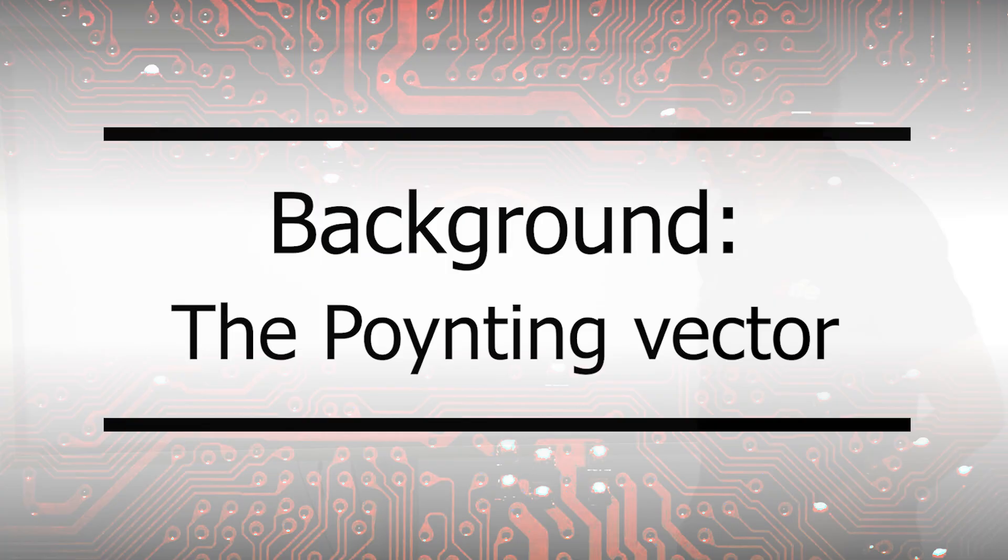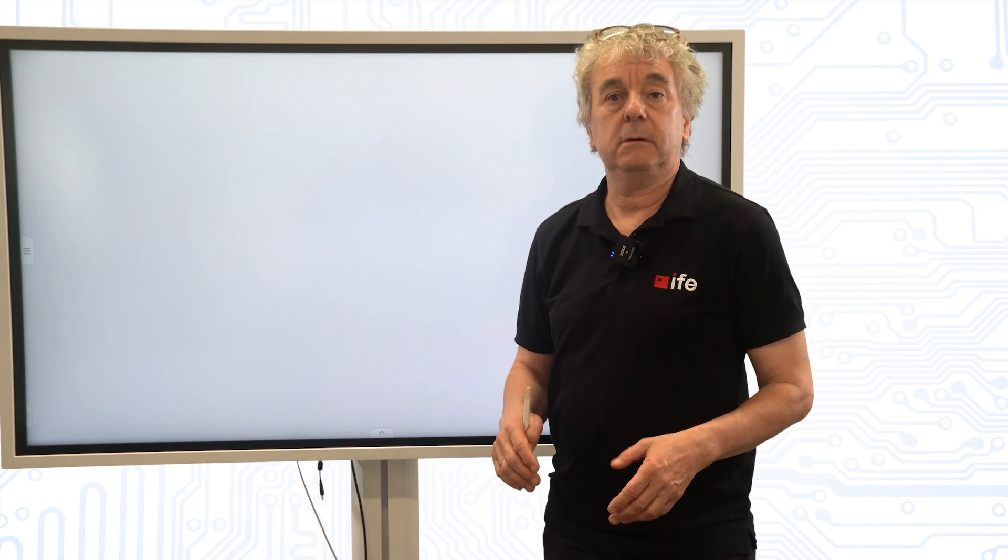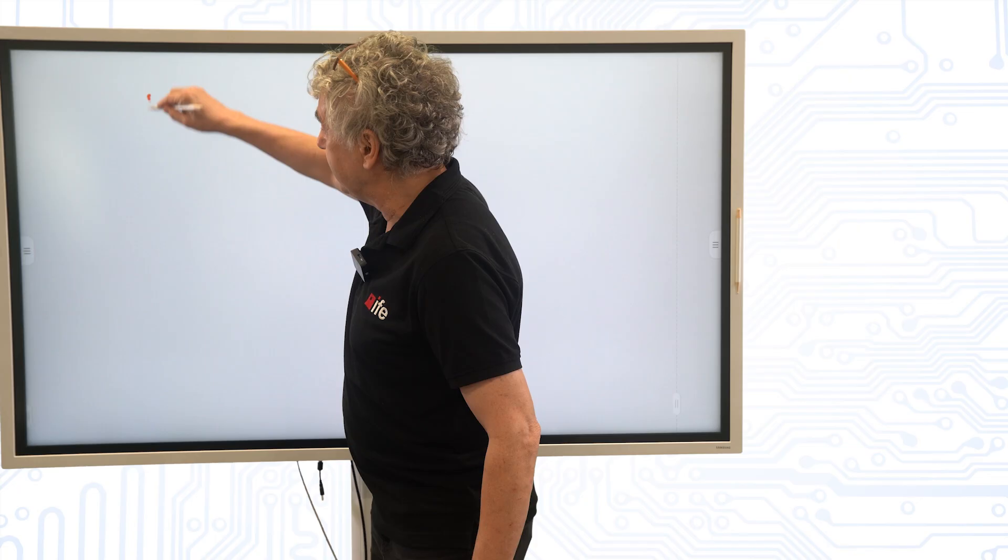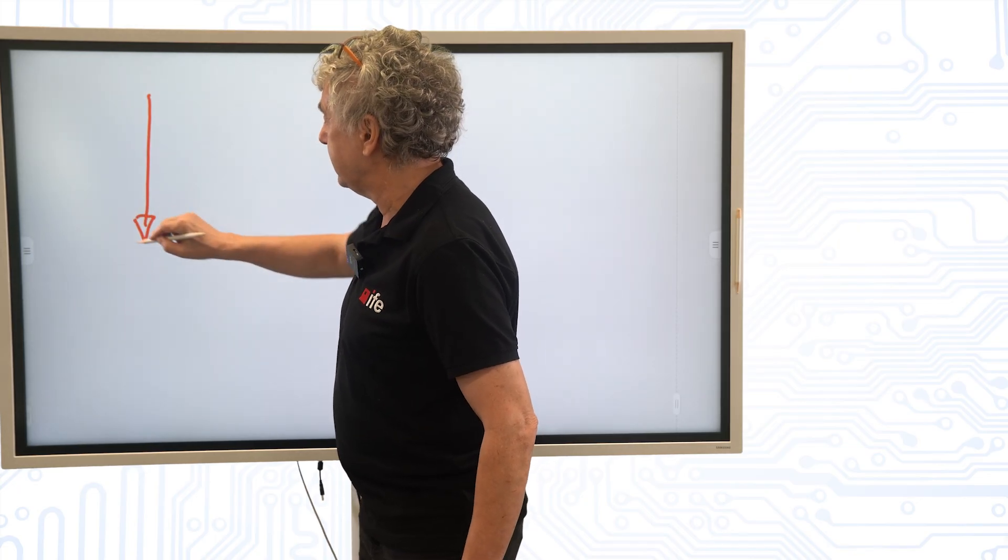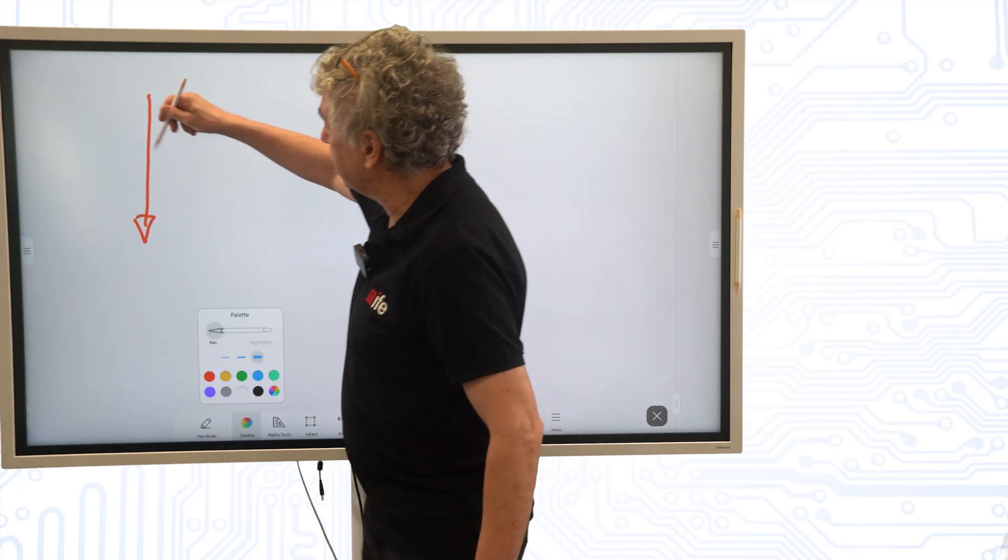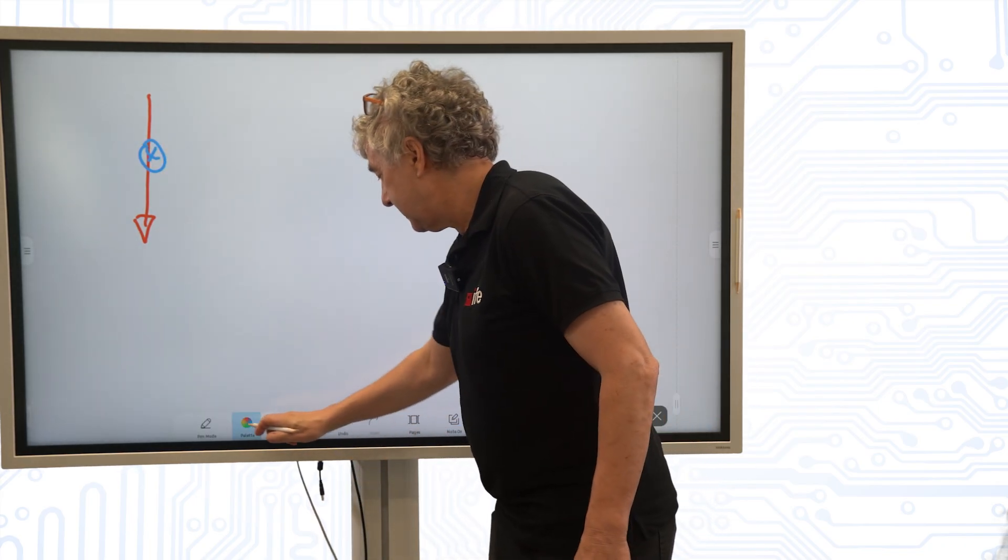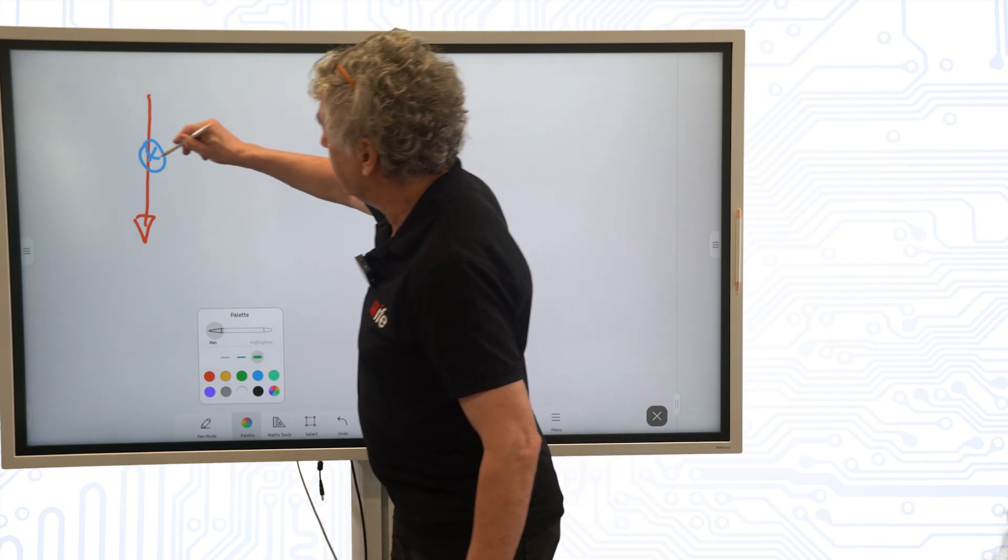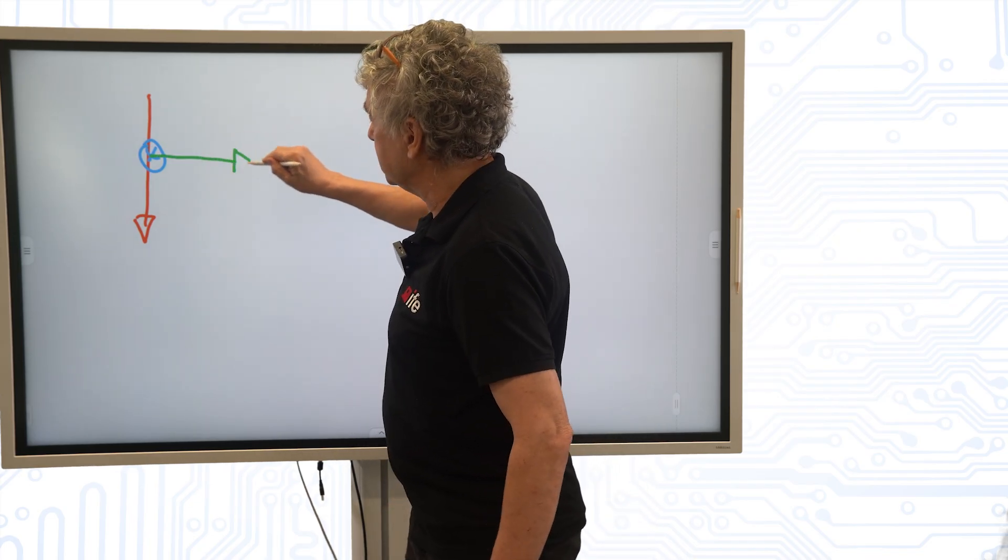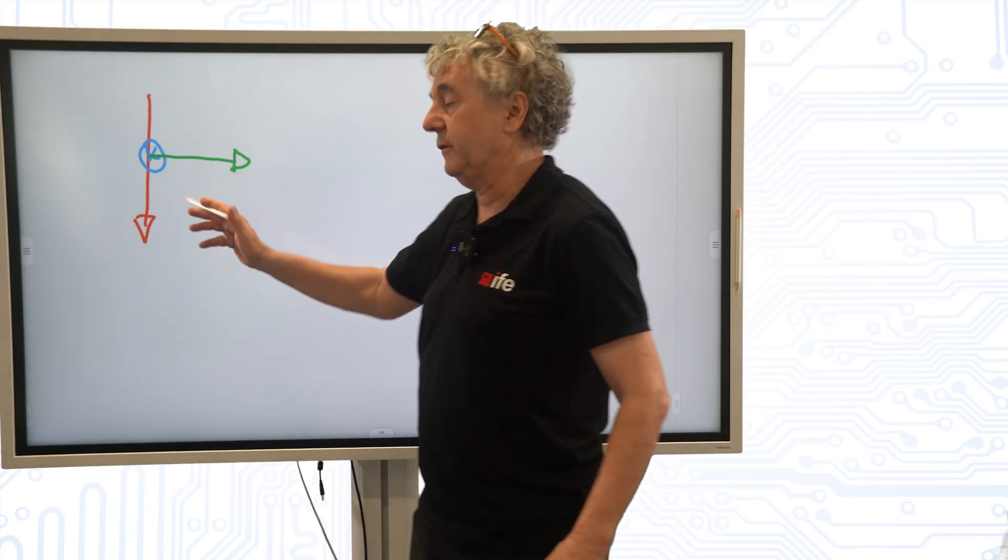So I need to remind everybody of some very basic things in electromagnetic theory about electric field, magnetic field, and Poynting vector. So if we have, for example, in a wave, an electric field like that, and a magnetic field like that, then the energy flow will be in this direction. The energy flow is a cross-vector product of the magnetic field and the electric field.